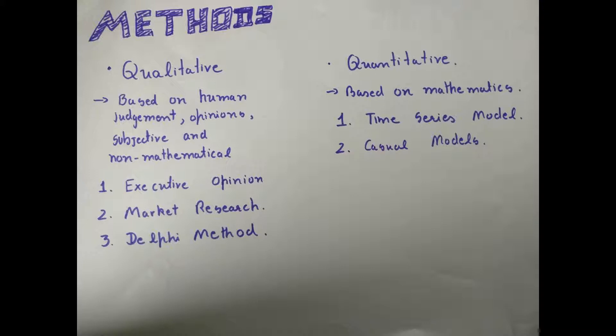We have three qualitative methods: executive opinion, market research, and Delphi method. Executive opinion is a forecasting method in which a group of managers meet and collectively develop a forecast. This method is often used for strategic forecasting or forecasting the success of a new product or service.